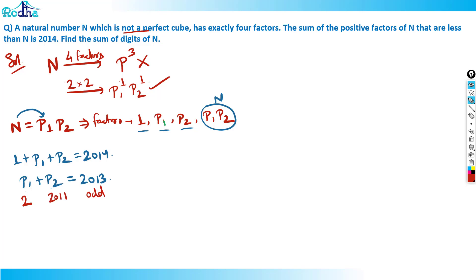That means one prime number has to be two to get an odd sum. So p1 is two, and p2 is 2011. Even plus odd is odd.